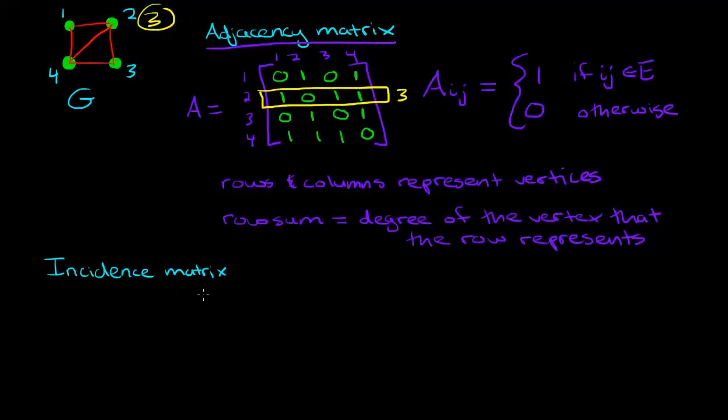Now let's check out the incidence matrix. So the incidence matrix is usually denoted by an M instead of an A. And there's one key difference. We still are going to be labeling our rows of our matrix via our vertices. So 1, 2, 3, and 4.